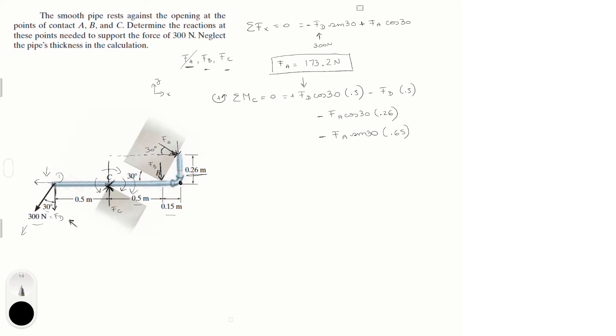Okay so we know F of D so we can plug that in. F of B we don't know is what we're trying to find. And F of A we found out in the step before. So let's solve this. 129.9 minus 0.5 F of B minus 39 minus 56.29 and we solve for F of B and you should get that F of B is equal to 69.22 newtons.